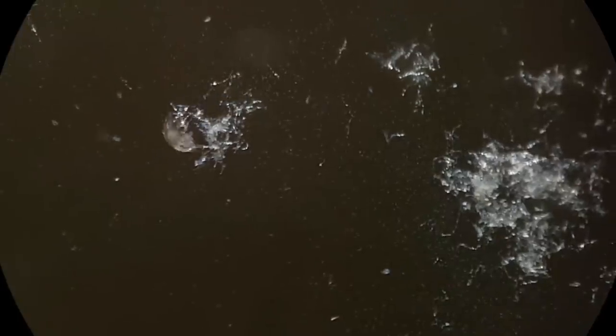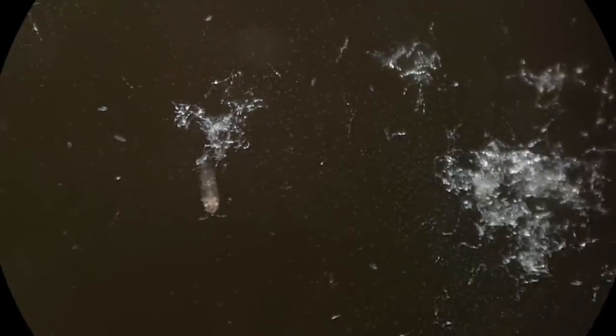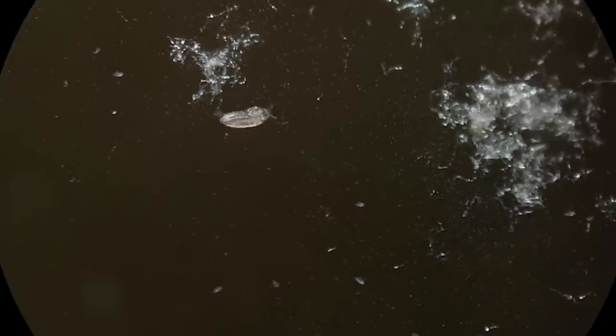On the one hand you have the smallest bacterium, which is one cell and way way too small to see at this magnification. Then you have these paramecium, which you can definitely see with the naked eye if you try hard enough. And there's frog eggs, which are clearly visible with the naked eye.